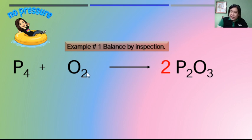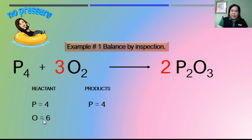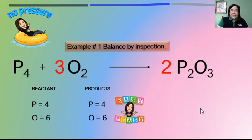You also add three as the coefficient for oxygen in the reactant side: three times two equals six. Let us check: in the reactant side there are four phosphorus atoms; in the product, two times two is also four. For oxygen, in the reactant side three times two gives six oxygen atoms, and in the products two times three also gives six oxygen atoms. So the equation is balanced.